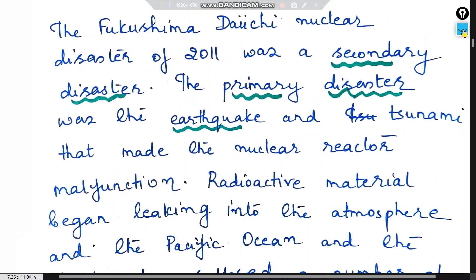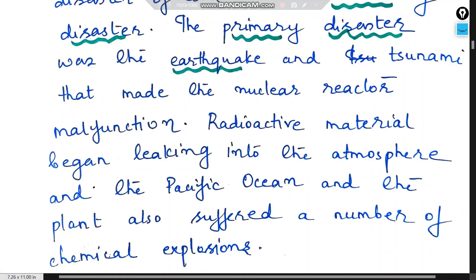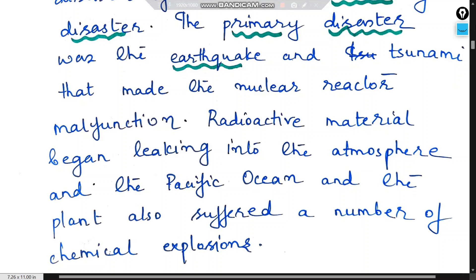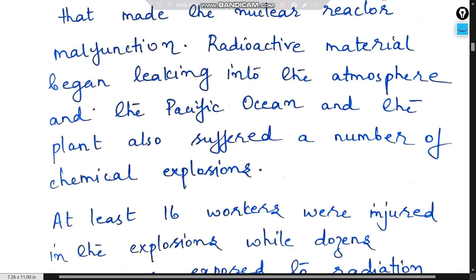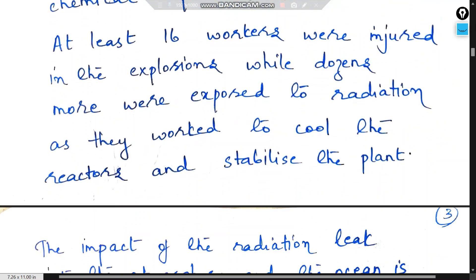For example, in the 2011 Fukushima Daiichi nuclear disaster in Japan, a nuclear plant burst and all the radioactive substances leaked into the ocean. The primary disaster was an earthquake and tsunami in that area. That made the nuclear reactor malfunction. Radioactive material began leaking into the atmosphere and the Pacific Ocean, and the plant also suffered a number of chemical explosions. At least 16 workers were injured in the explosions, while dozens were exposed to radiation as they worked to cool the reactors and stabilize the plant.